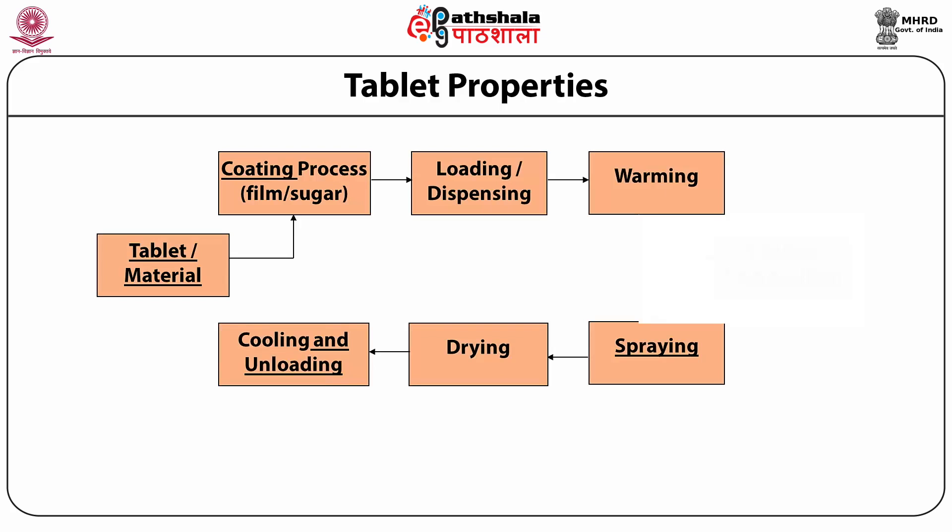As discussed, there are three primary components involved in virtually all tablet coating procedures: first, tablet core — the material to be coated; second, coating compositions; and third, coating process and equipment. All these components influence the coating process in one way or another, and careful selection and control of these components is necessary to achieve effective coating.